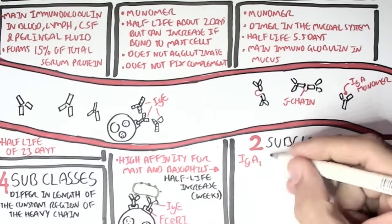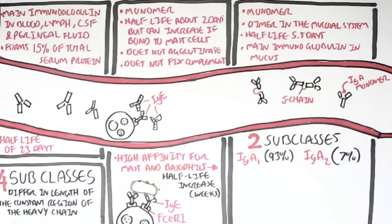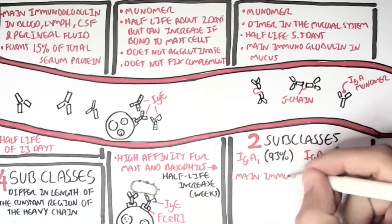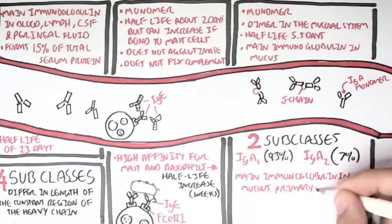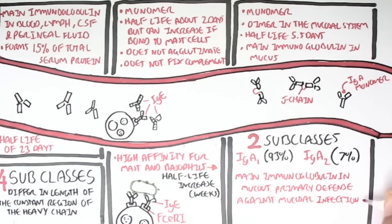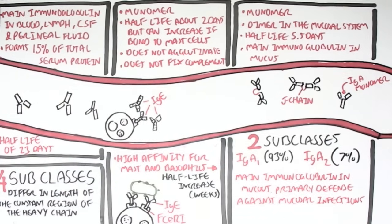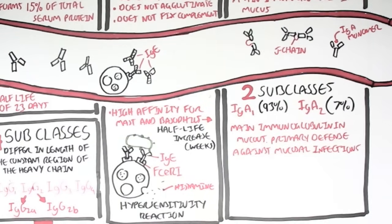Now there are two subclasses of IgA. There's IgA1, which makes up 93% of all IgAs. And there's IgA2, which makes up 7% of all IgAs. And as I mentioned, it is the main immunoglobulin in the mucus, in the mucosal system. And so has the primary defense against mucosal infections, such as HIV and Helicobacter pylori, and Strep pneumonia, which attacks the lungs.